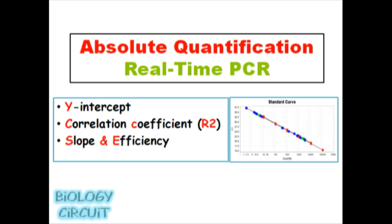Hi everyone and welcome back again to Biology Circuit. In this video I will discuss absolute quantification method in real-time PCR, and these three parameters - y-intercept, slope and efficiency, and correlation coefficient R-square - are important for assessing the performance of a reaction.